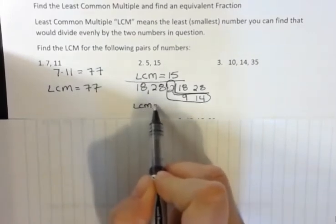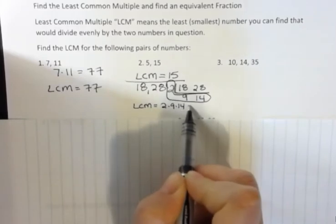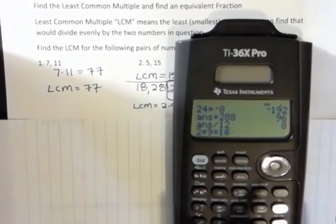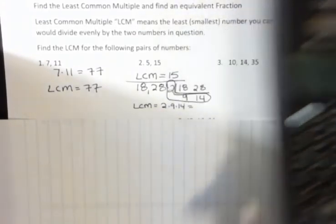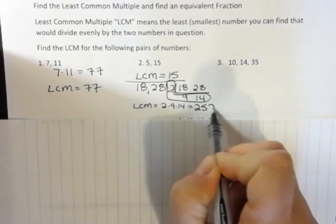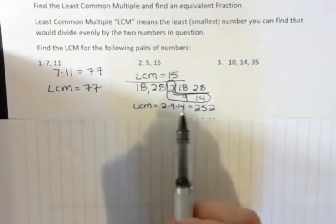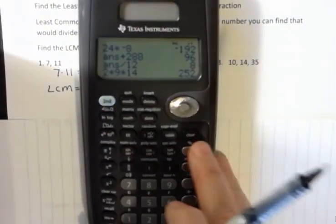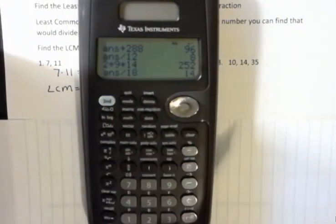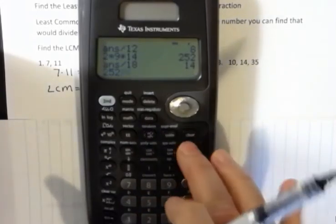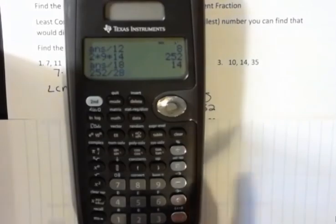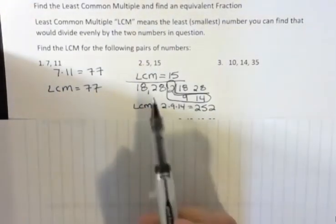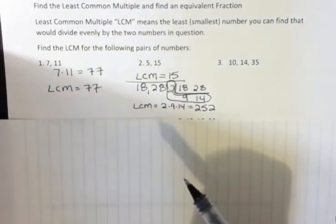My LCM here is going to be two times nine times fourteen. And if I multiply that, two times nine times fourteen, I get 252. And that means that 252 is the least number I could get that eighteen and twenty-eight would both go into. Look at 252 divided by eighteen. That comes out to be fourteen. And 252 divided by what was the other number? Twenty-eight. That comes out to be nine. So 252 is divisible by eighteen and twenty-eight evenly. That makes it the LCM.